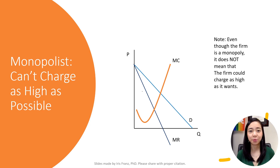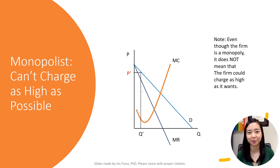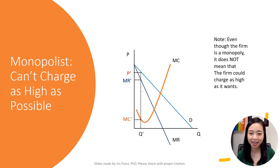Just because you are a monopolist does not mean you will charge as much as possible. In fact, doing so will not maximize your profit. Suppose you charge P prime. Given price P prime, consumers are only willing to buy a quantity Q prime. In this case, your marginal revenue MR prime is higher than the marginal cost MC prime, so you are not maximizing your profit. To maximize your profit, you should sell more by lowering your price to P star, like what we had before.